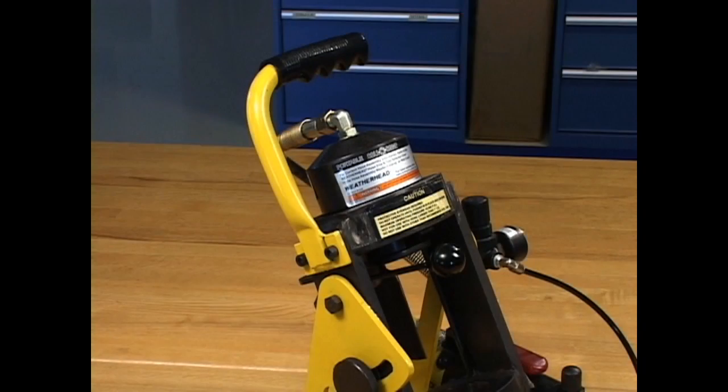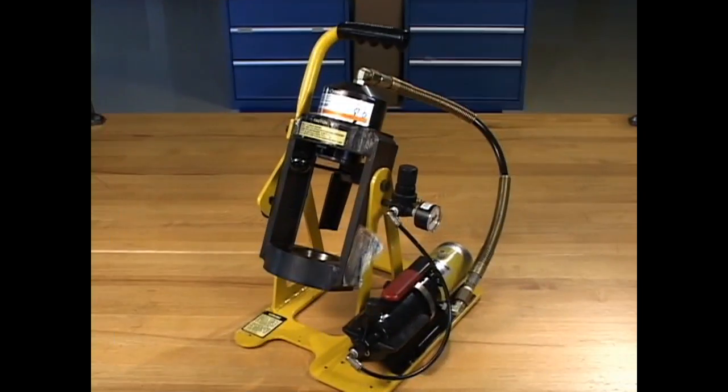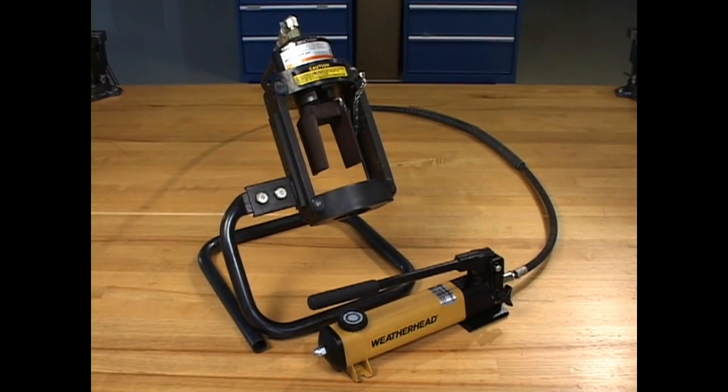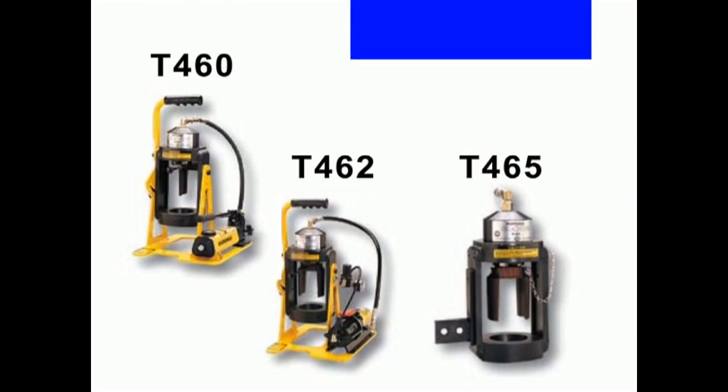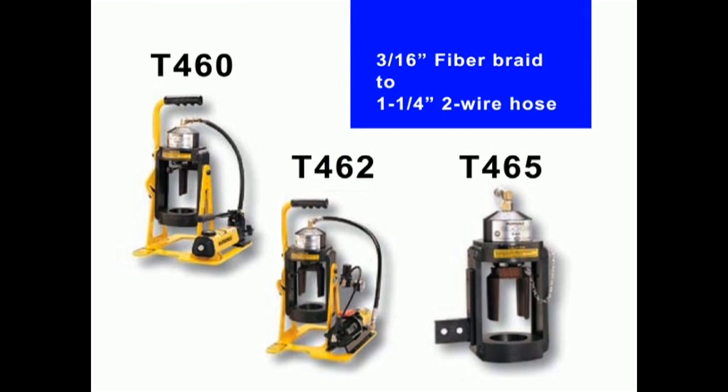The portable models, the T-460, T-462 and the T-465 are identical except for the type of power source. All are engineered to crimp 3/16 inch fiber braid hose through 1 and 1/4 inch, 2 wire hose.